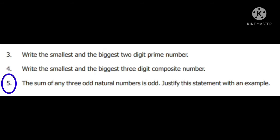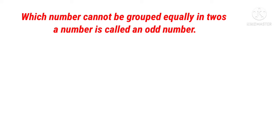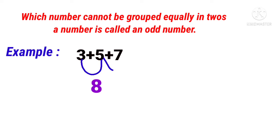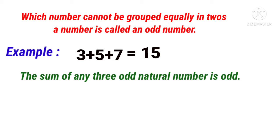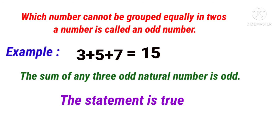Fifth sum: the sum of any 3 odd natural numbers is odd. Justify this statement with an example. A number that cannot be grouped equally in 2s is called an odd number – that is, a number not divisible by 2. For example, take 3, 5, and 7 – three odd numbers. 3 plus 5 is 8, and 8 plus 7 is 15. 15 is also an odd number because 15 is not divisible by 2. So the statement is true.